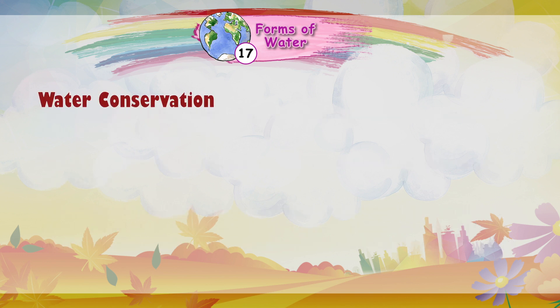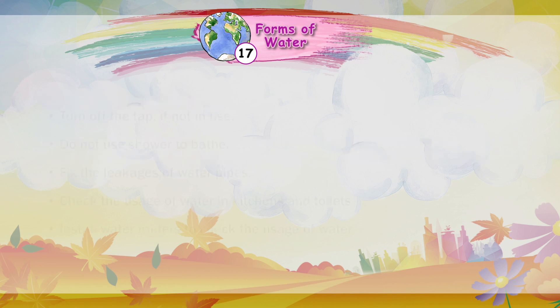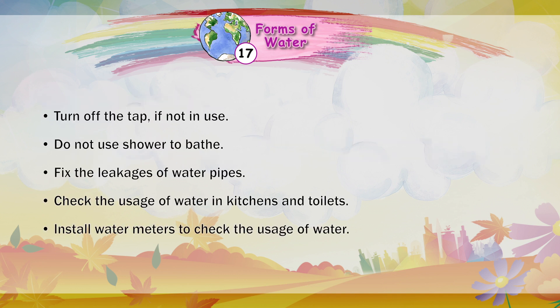Water Conservation. Fresh water is limited and our need for consuming it is increasing day by day, so we should conserve water for future use. To conserve it, follow these points: turn off the tap when not in use; do not use a shower to bathe; fix leakages in water pipes; check the usage of water in kitchens and toilets; and install water meters to monitor water usage.